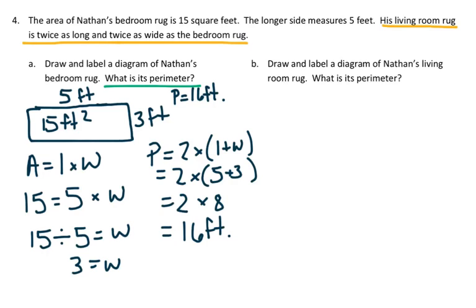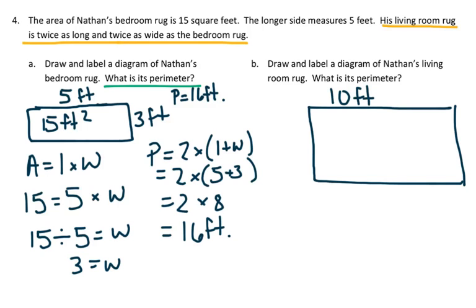We're going to draw a picture of the living room rug. It's twice as long and twice as wide. The length for his bedroom rug was 5, so twice as long, that would be 10 feet. The width was 3, so twice as wide would be 6.